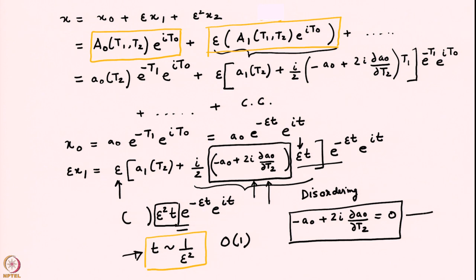Setting that term to zero leads to an equation for A0. Recall that A0 is a function of T2, so we now have an equation governing A0. Let us solve that equation and determine the functional dependence of A0 on T2.